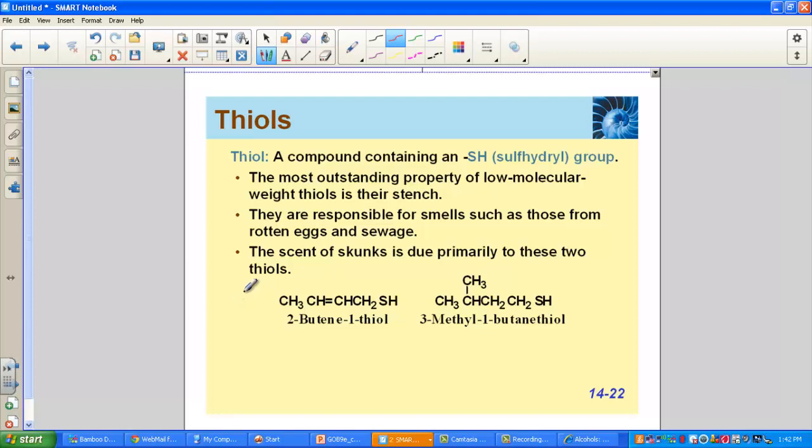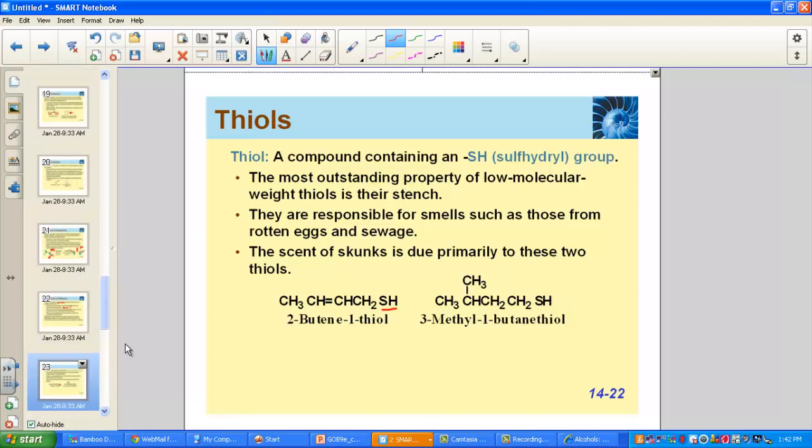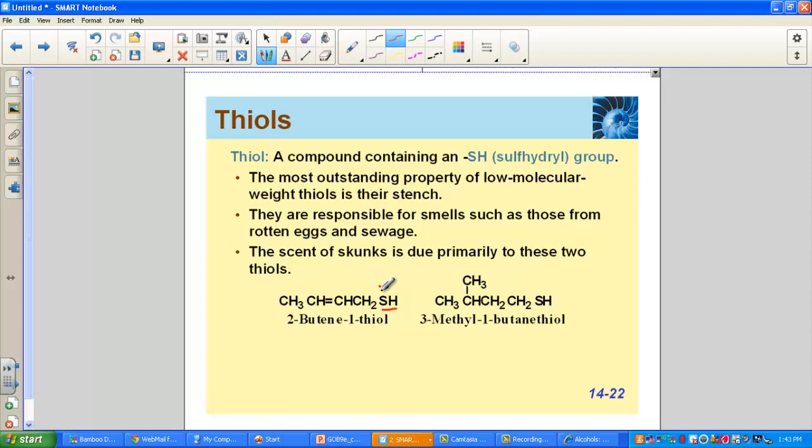Here's a functional group called the thiols. The functional group contains an SH, the sulfhydryl group bonded to a tetrahedral carbon atom, with a Lewis structure as shown here. Notice that the SH is very similar to how we saw OH in the previous lesson for alcohols. But with OHs, those had very strong hydrogen bonds. S to H, the electronegativity difference is not that great and therefore tends to favor a nonpolar region of the molecule.